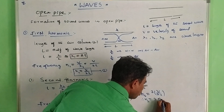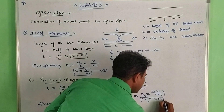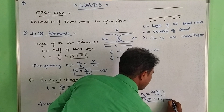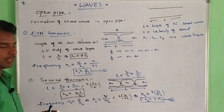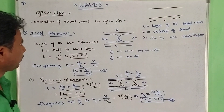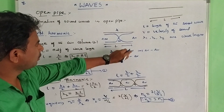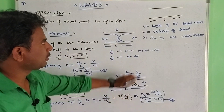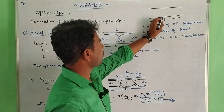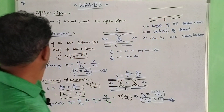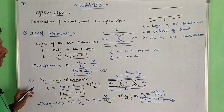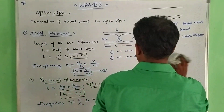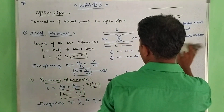Substituting in the equation gives N2 = 2N1. This is equation number 2. Here we have the first harmonic, second harmonic, and again the third harmonic for open pipe.